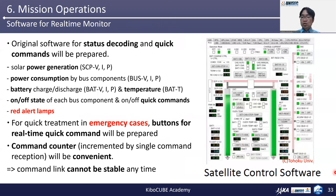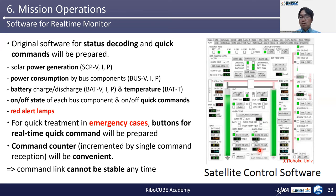I'll show you the functions of satellite control software. In most satellite operations, you will make original software for status decoding and quick command function. The status window shows solar power generation including voltage, current, and power; power consumption by bus components; battery charge and discharge state; temperature; and on-off state of each component. There are quick turn-on and off buttons. Red alert lamps are important for us to notice emergency conditions immediately. For quick treatment in emergency cases, real-time quick command will help, but I recommend hiding the button for critical functions.